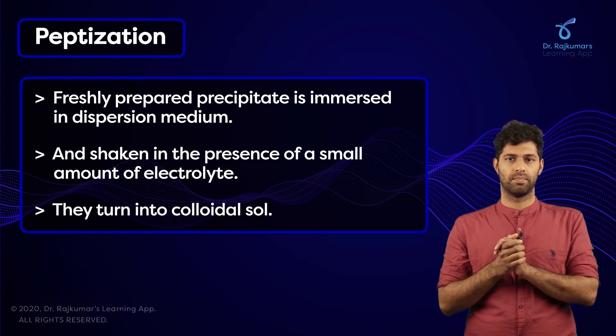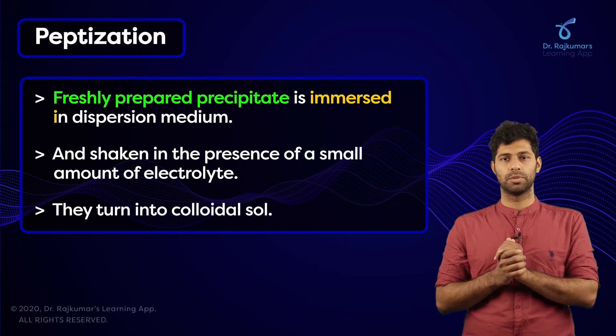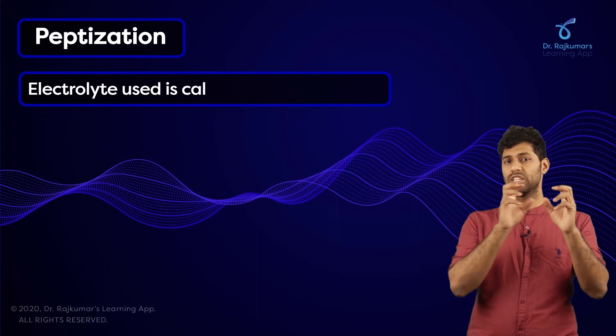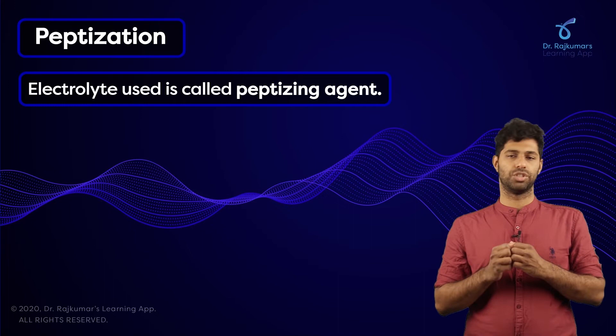Remember these keywords: freshly prepared precipitate, immersed in dispersion medium, and when shaken in the presence of a small electrolyte — this is more important, small electrolyte — then we find the colloidal sol being formed. The electrolyte that is present for the purpose of forming a colloidal sol is called the peptizing agent. Remember this keyword: peptizing agent.